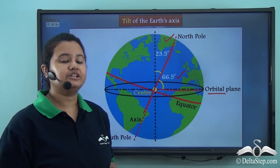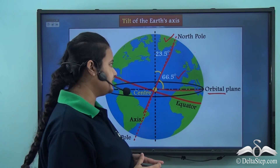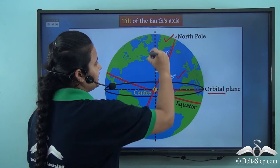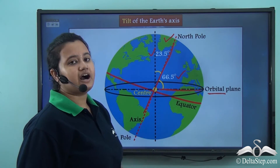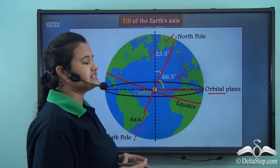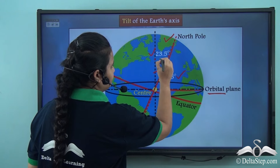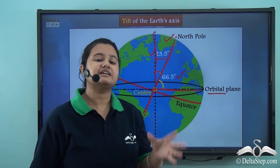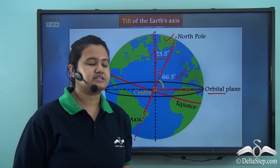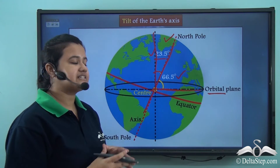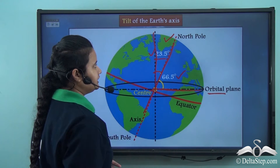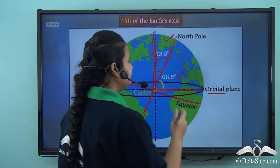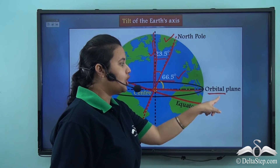The Earth's axis is tilted at an angle of 66 and a half degrees from the orbital plane. We can also express this as 23 and a half degrees from the perpendicular to the orbital plane. So we can define the tilt of the Earth's axis in two ways: it is tilted at 23 and a half degrees from the perpendicular to the orbital plane, and also at 66 and a half degrees from the orbital plane itself.